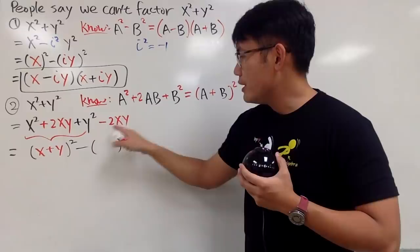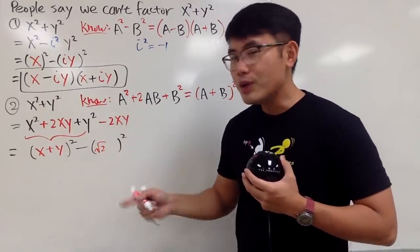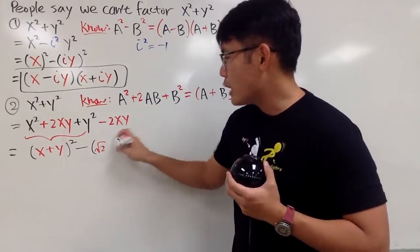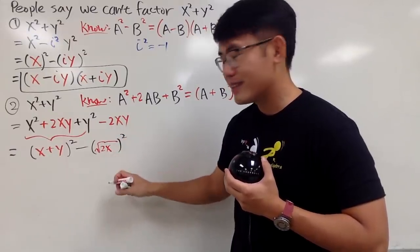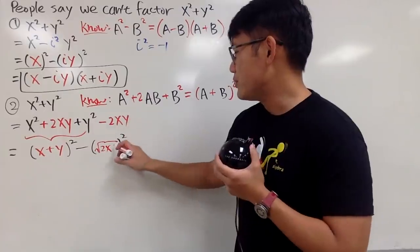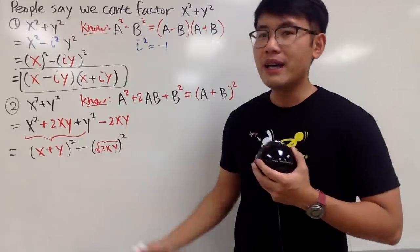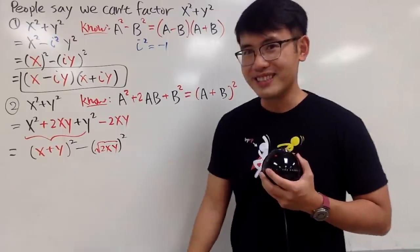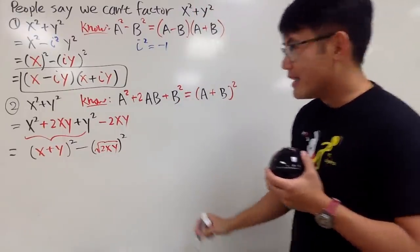Now, what to the second power will give us 2? And the answer to that is square root of 2. And what to the second power will give us x? And the answer to that is square root of x. And, of course, I can just make the square root longer and put the x inside. And lastly, of course, same speech, we'll put the y inside. And when we are looking at square root of 2xy, unfortunately, this is no longer a polynomial, so people don't usually do this when they are talking about factoring x squared plus y squared.